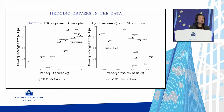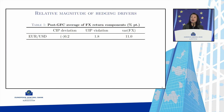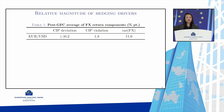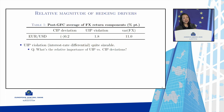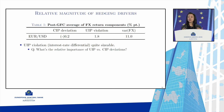The simple model also shows that FX return has several components: CIP deviation, UIP violation, and the variance of FX return. Looking at post-GFC averages, UIP violation proxied by interest rate differentials is quite sizable — about two percentage points on average — versus roughly 20 basis points for CIP deviation. This raises a natural question for future research: what is the relative importance of UIP violation versus CIP deviation in driving investors' portfolio choice? The variance of FX return is also huge.